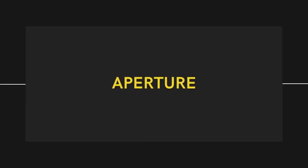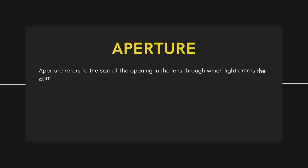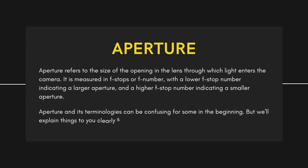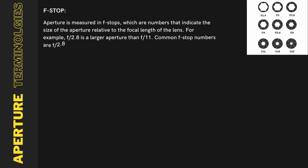Let's begin with aperture. Aperture refers to the size of the opening in the lens through which light enters the camera. It is measured in f-stops or f-numbers, with a lower f-stop number indicating a larger aperture and a higher f-stop number indicating a smaller aperture. Aperture terminology can be confusing to beginners, but we'll explain things clearly so you can master it. Aperture is measured in f-stops, which are numbers that indicate the size of the aperture relative to the focal length of the lens.